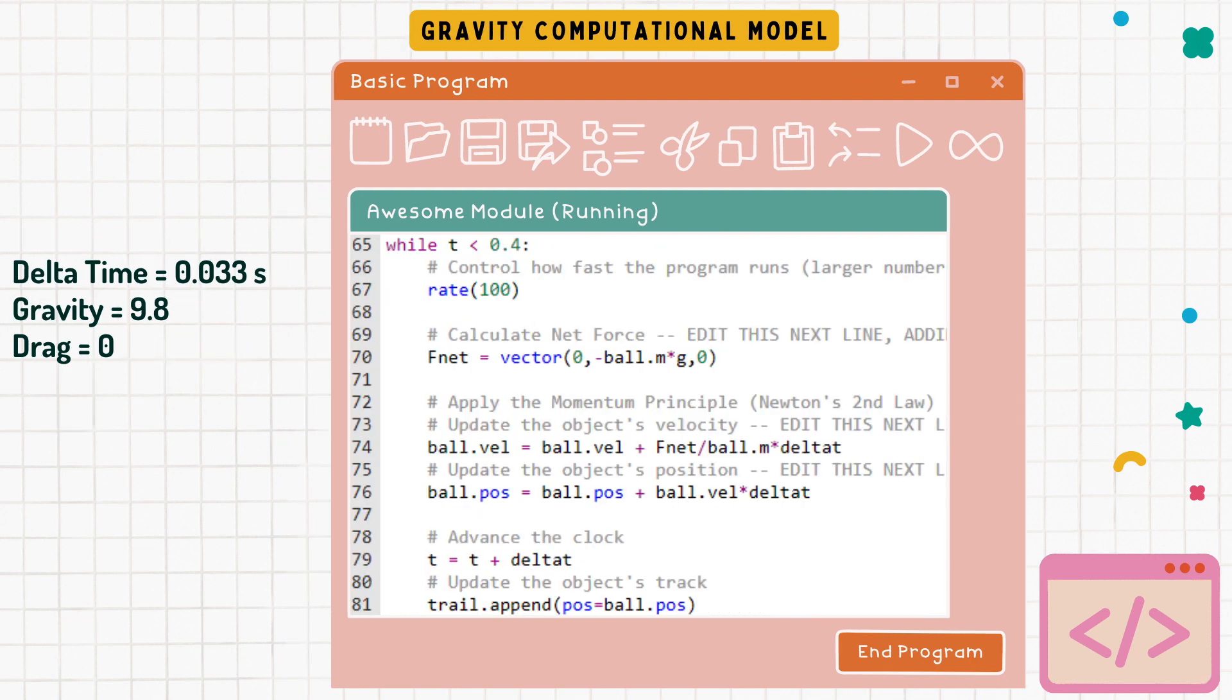So for the gravity computational model we only consider gravity into our forces. With this being said for our net force we just multiplied our mass times negative gravity since it's falling and then for our velocity we divided our net force by our mass times delta t.